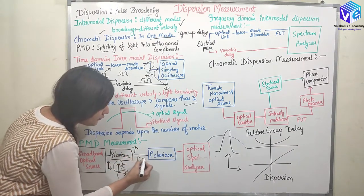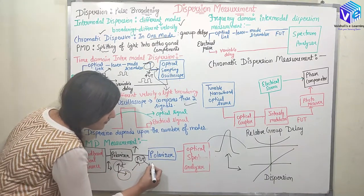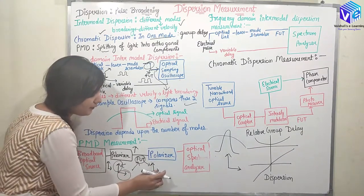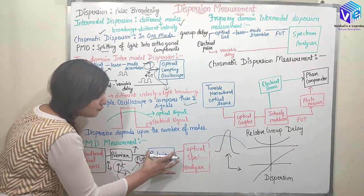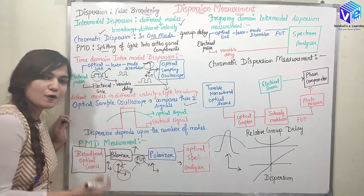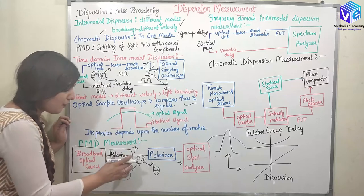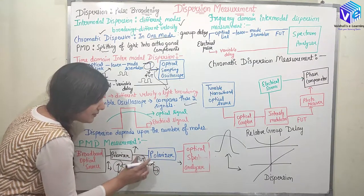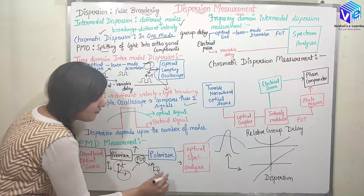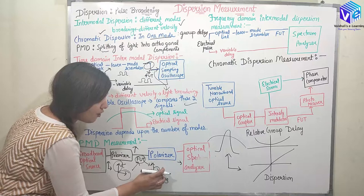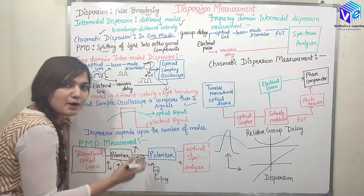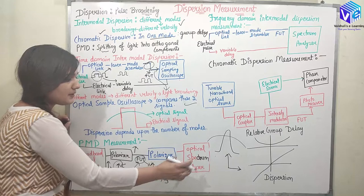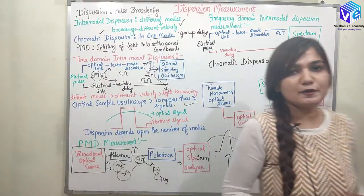This vertical signal is sent to the fiber under test. Inside the fiber under test, due to polarization effects, a horizontal component also appears. This horizontal component is then sent to another polarizer which detects only the horizontal component. This horizontal component was not present at the input of the fiber under test — it appeared after the signal propagated through the fiber. So this is the undesired signal generated by the fiber itself. We measure this horizontal component using an optical spectrum analyzer to determine the amount of PMD.